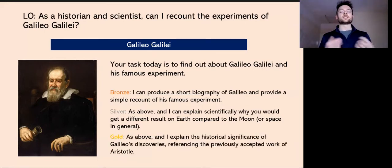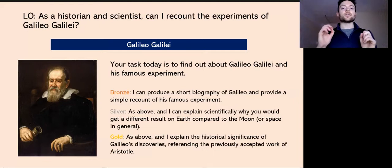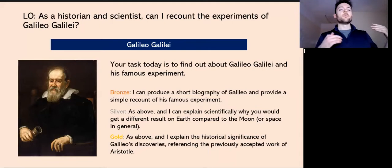And gold, you're going to need to do a bit more historical research and discovery for gold. So as above, and I explain the historical significance of Galileo's discoveries, referencing the previously accepted work of Aristotle. Now, in the video of Galileo's experiment that I've linked, there is a mention of Aristotle. Now, they talk about Aristotle and they say that basically his ideas were accepted for a very long time and then Galileo came along and decided, I think he's wrong.